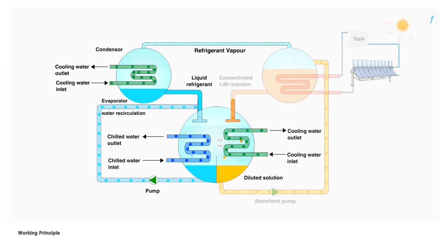Chilled water loses heat, as we saw earlier, to drop from 12 degrees Celsius to 7 degrees Celsius. This chilled water is used to cool spaces. The absorption chiller thus allows us to chill water from 12 degrees Celsius to 7 degrees Celsius.